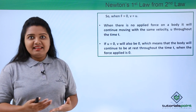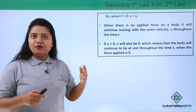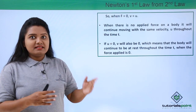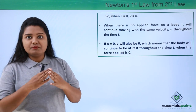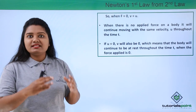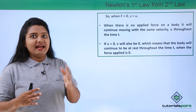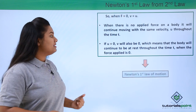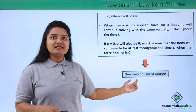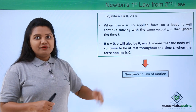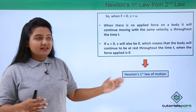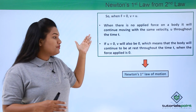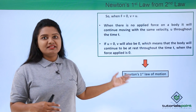This is like saying that whenever a body is in a particular state of rest or of uniform motion, there is no change in that state unless the body is compelled by an external force to change its state of rest or of uniform motion in a straight line. This is basically Newton's first law of motion. We started from Newton's second law of motion and at the end we have reached Newton's first law — this is how we derive Newton's first law from Newton's second law.